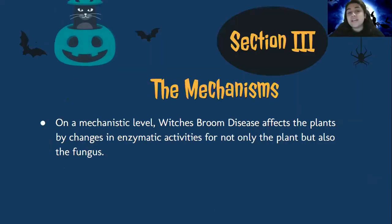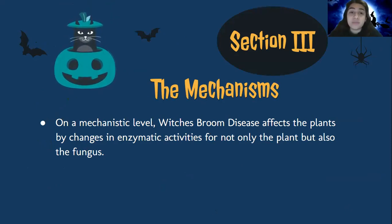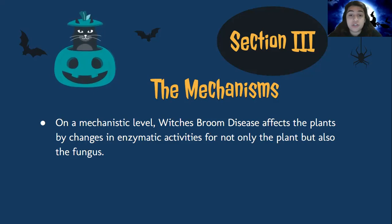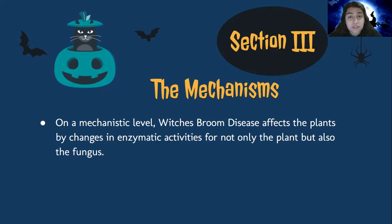On a mechanistic level, Witch's Broom disease affects plants by changes in enzymatic activities for both the plant and the fungus. Unfortunately, fungal and host interactions are difficult to differentiate between individual effects; therefore, the changes are looked at as a whole. Symptoms of Witch's Broom disease are very noticeable and mirror fungal phases.